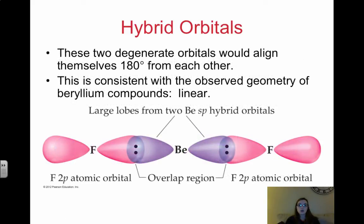Now these two degenerate orbitals actually can align themselves 180 degrees from each other. Because remember, electrons want to be as far apart as possible, whether they're lone pairs or whether they're bonds. So the two degenerate orbitals are going to align themselves 180 degrees from each other. And this is consistent with the molecular geometry of BeF2, which is linear. So just notice, this is actually how this bonding occurs. The bond between beryllium and fluorine, that's the overlapped region. And this is looking at the sp hybrid orbitals.